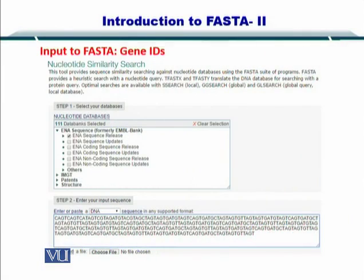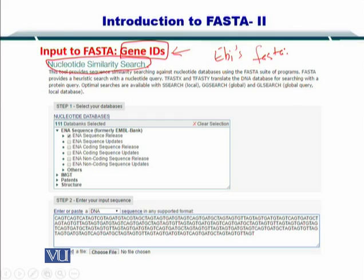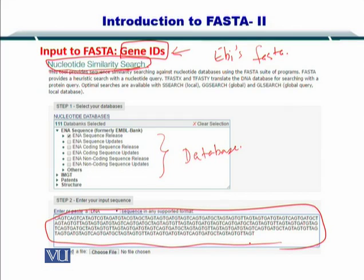To help you visualize things — input to FASTA, for instance if you want to do a nucleotide similarity search, can be gene IDs. You just go to the web portal and click on nucleotide. This portal is the EBI's FASTA. Once you select the nucleotide similarity search, you can specify the database you want to compare your sequence with, and here you can enter your sequence.